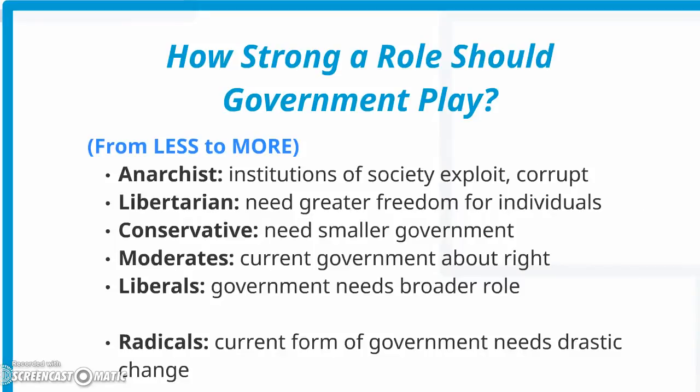How strong a role should government play? This is on a scale from less to more. The least would be the anarchists — the institutions of society exploit and corrupt — and anarchists are often in favor of abolishing any kind of government involvement. Libertarians would emphasize the need for greater freedom for individuals and individual responsibility. Conservatives would like smaller government, less taxation, and less government spending.